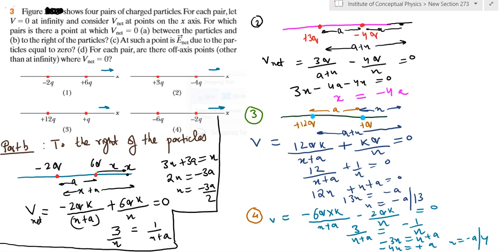The value comes out to be negative, which means the potential on the right hand side of the pair of charges is never zero. So the answer is, none of the pairs will give you a V_net of zero on the right hand side of the pair. Thank you.